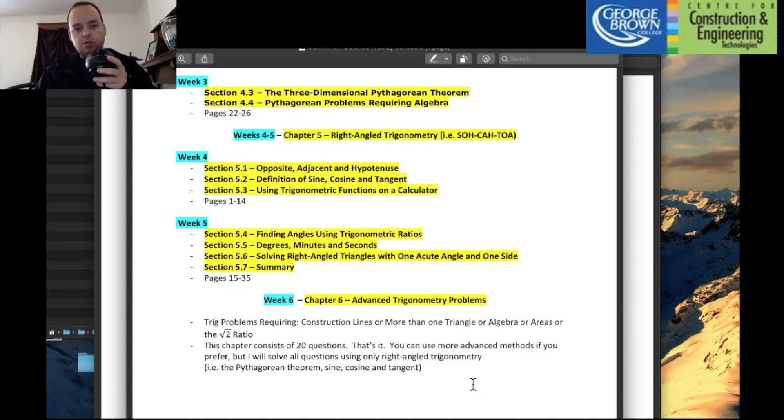So this is really there to just make sure that you can solidify your understanding of the Pythagorean Theorem, sine, cosine, and tan. Now, if you are familiar with more advanced trigonometry methods, like sine and cosine law, they do help answer some of these questions faster, but I will stick to right-angled triangle analysis for the entire six weeks that I'm dealing with the material with you.